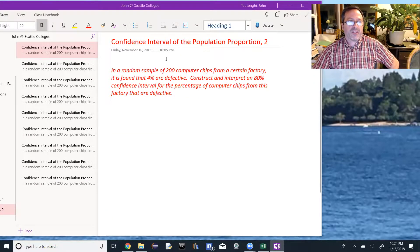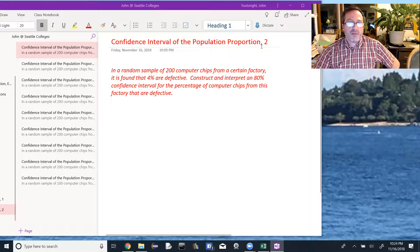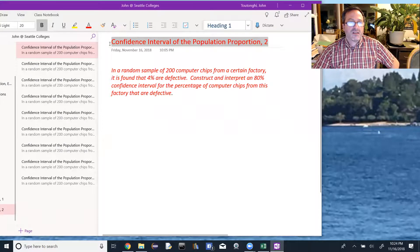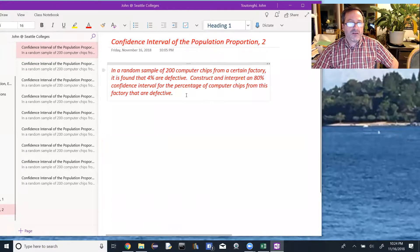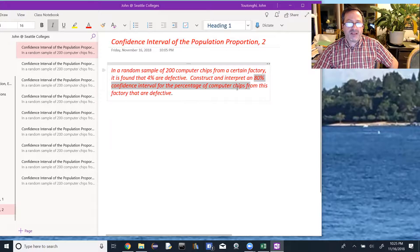Here we're going to look at another example of confidence interval of the population proportion. In this case, we're going to look at an interval where we don't have a common value for z alpha over 2. In a random sample of 200 computer chips from a certain factory, it is found that 4% are defective. Construct and interpret an 80% confidence interval for the percentage of computer chips from this factory that are defective.